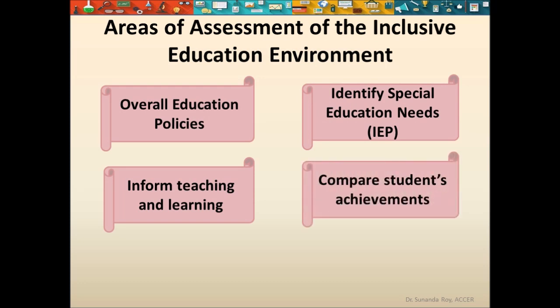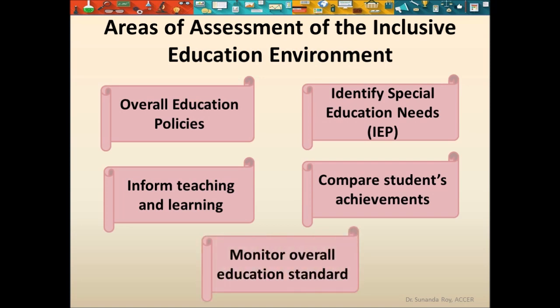Assessments which are summative in nature normally compare the students' achievements with those of their peers. However, in inclusive education — and especially regarding students with disabilities — it is more desirable to compare the student's current achievement with his or her earlier achievements. The school needs to modify their summative assessments in order to cater to the needs of the students with disabilities, while ensuring the assessment remains effective for all types of students. Only then will the school be able to follow the principles of assessment in inclusive education, which in turn will help monitor the overall education standard of the inclusive institution.